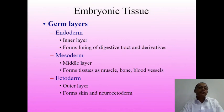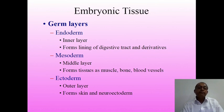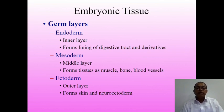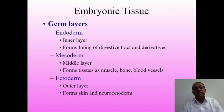Embryonic tissue is made up of three germ layers: endoderm, mesoderm, and ectoderm. Endoderm — we know it is the inner layer — forms the lining of the digestive tract and derivatives of the digestive system. Mesoderm forms tissues such as muscle, bone, and blood vessels. At the wall of blood vessels we observe mesoderm. Ectoderm is the outer layer — our skin consists of ectodermal epithelium, or neuro-epithelium.